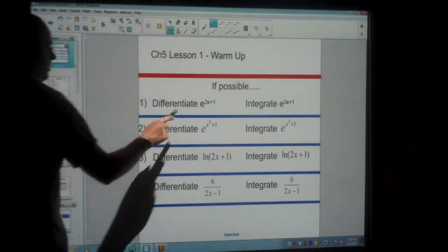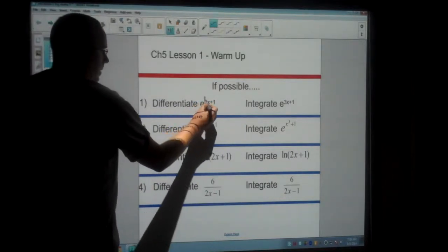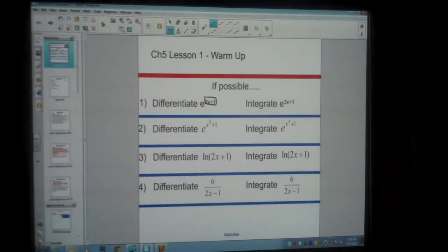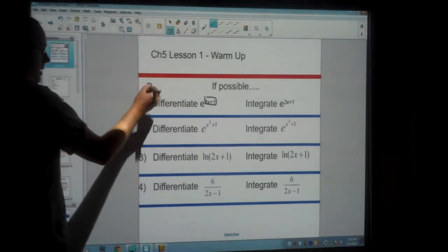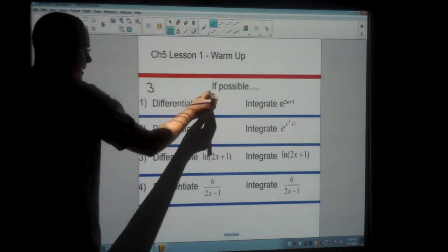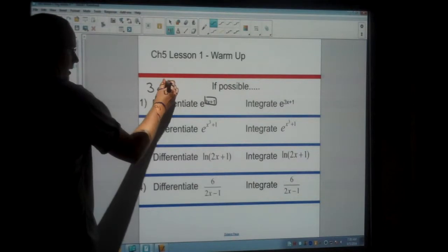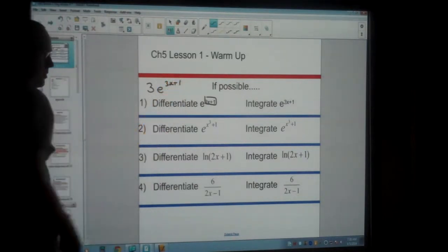So when we differentiate the exponential function, we look at what the exponential is and actually differentiate that. So the differential of 3x plus 1 is 3. Then whatever the original question was, that goes after your answer.